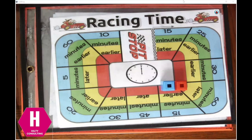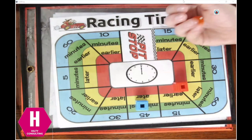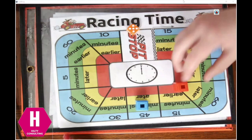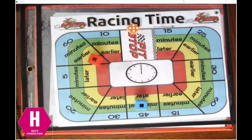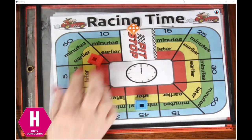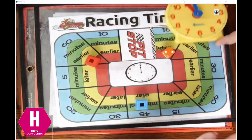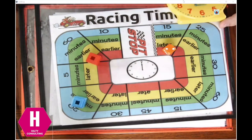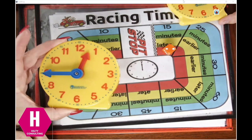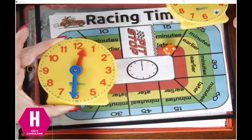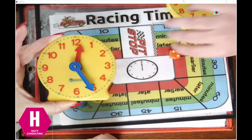Brett rolled a 5, landing on 60 minutes earlier. He was at 12 o'clock, so he had to make his clock 60 minutes earlier — he is now all the way back at 11 o'clock. I rolled a 2, so I have to make mine 20 minutes earlier. I was at 12:45, I'm going to back up 15 minutes and then 5 more, and now I'm at 12:25.